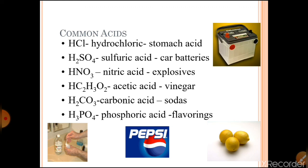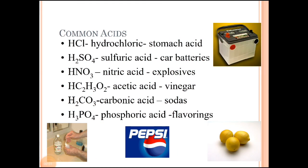When an ant bites or stings, the sting contains formic acid. When milk is converted to curd, that curd contains lactic acid — the lactose in milk is converted to lactic acid by bacteria called Lactobacillus. Hydrochloric acid is present in our stomach; it kills bacteria so that the digestion process runs smoothly. Your homework for today: find out which acid is known as the 'king of chemicals' and why — write this answer when you start the lesson.